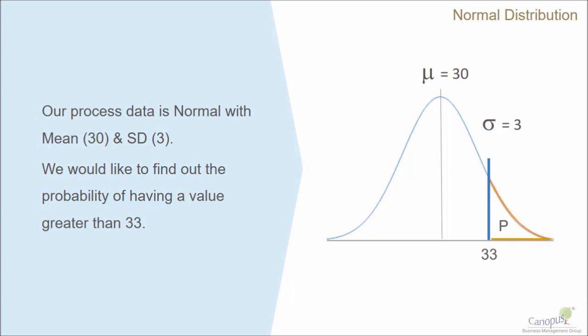Now we want to know what would be the probability of having a value greater than 33. Let's say this is the cycle time data of a process, and your customer says, 'Tell me what is the probability that you would exceed 33, because 33 is very critical to me.'